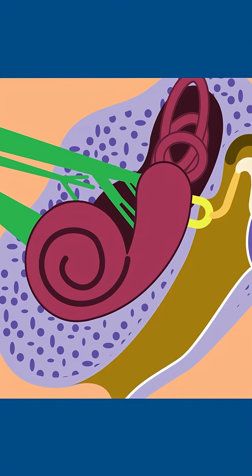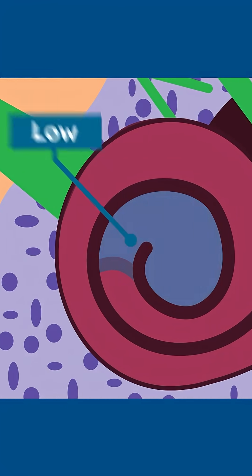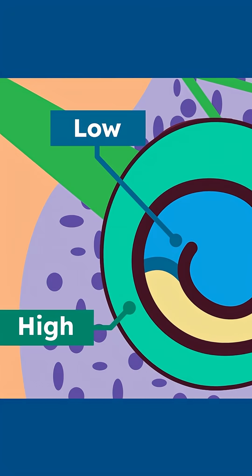The cochlea is tonotopically organized, which means that different parts of the cochlea are better suited to detect specific frequencies of sounds.